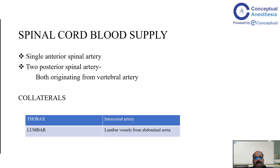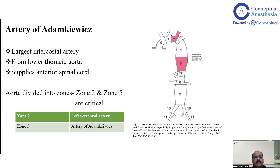Spinal cord blood supply comes from one anterior spinal artery and two posterior spinal arteries, all originating from the vertebral artery. Collaterals along the entire length of the spinal cord arise from various intercostal and lumbar vessels originating from the abdominal aorta. The artery of Adamkiewicz is the largest intercostal artery providing collaterals to the spinal cord — mainly the anterior spinal artery — and supplies primarily the lower thoracic cord.